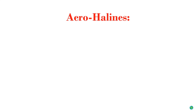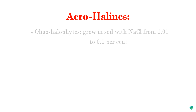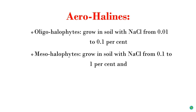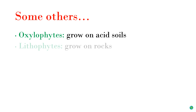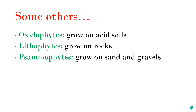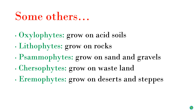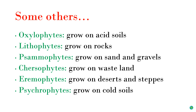The last category is aero-halines, classified in 1936 into three types based on soil salinity percentage. First, oligo-halophytes grow where sodium chloride in soil is 0.01 to 0.1 percent. Meso-halophytes grow where sodium chloride is about 1 percent. Additionally, there are other plant types: oxalophytes grow on acid soils, lithophytes grow on rocks, psammophytes grow on sand and gravels, chersophytes grow on wastelands, eremophytes grow on deserts and steppes, and psychrophytes grow on cold soils.